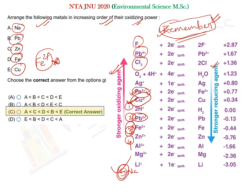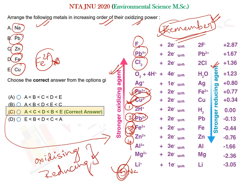So this is your sequence for oxidizing power. This table of oxidizing and reducing power is very useful from an examination point of view. I hope you have followed the lecture, and we will come with more questions and detailed solutions in the next class. Have a nice day.